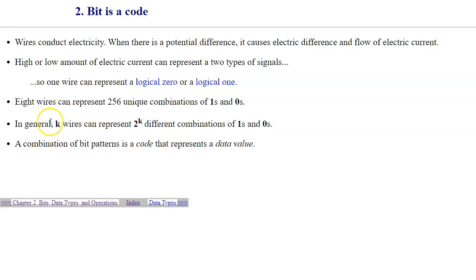Combinations of wires can represent unique combinations of zeros and ones. For example, if we have eight wires, then the maximum number of unique combinations that could be constructed from all sorts of patterns of zeros and ones would be 256.